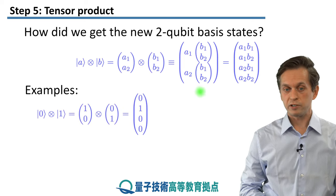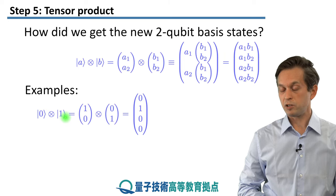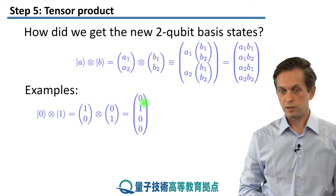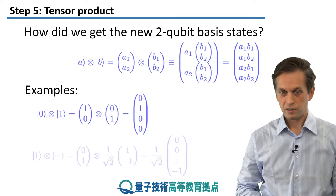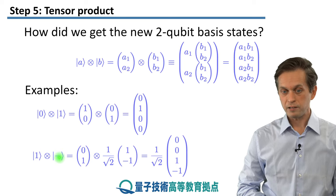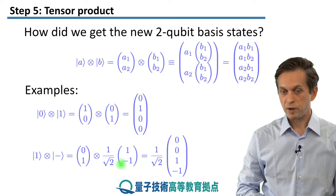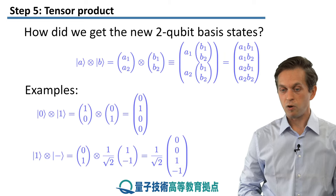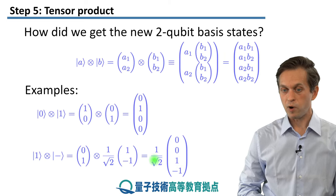For example, if the first qubit is in state |0⟩ and the second qubit is in state |1⟩, we write it as column vectors (1, 0) tensor product (0, 1). That gives: 1×0=0, 1×1=1, 0×0=0, 0×1=0. We can also do it for a more complicated state — the tensor product of |1⟩ with |−⟩. That's (0, 1) tensor product 1/√2 times (1, −1), giving the two-qubit state (0, 0, 1, −1) all divided by √2.